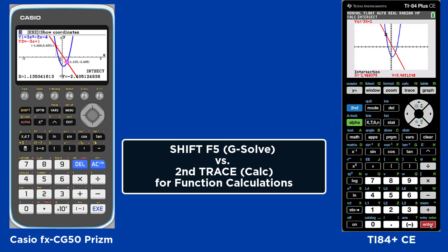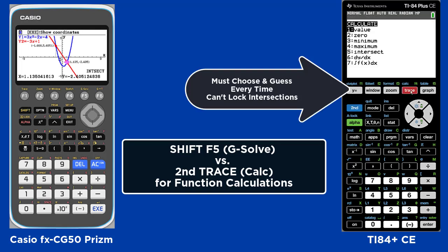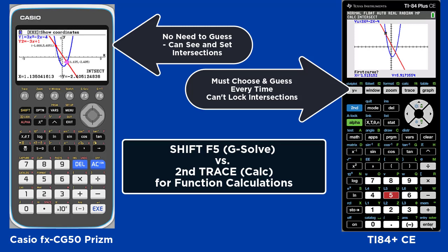Another difference is that on the Casio, you are able to use the Execute button to set the intersections and see them on the screen. On the TI, you must choose and guess every time and remember the intersections since you can't lock them.